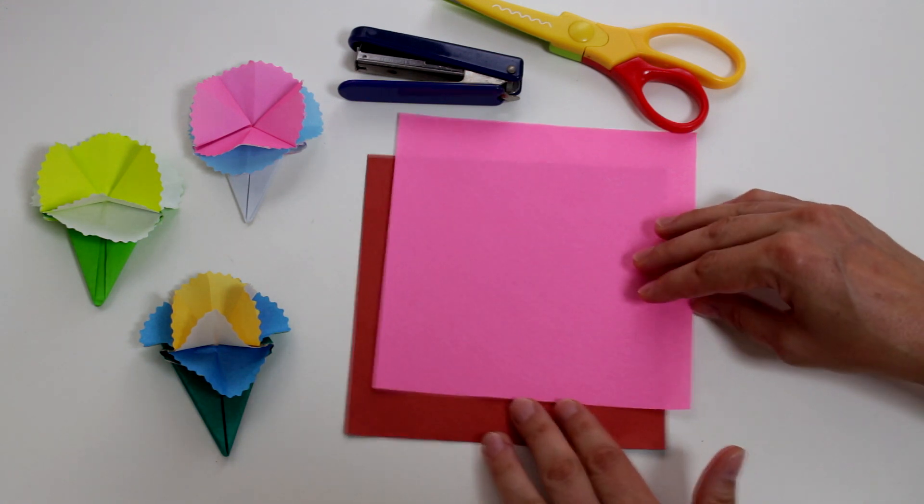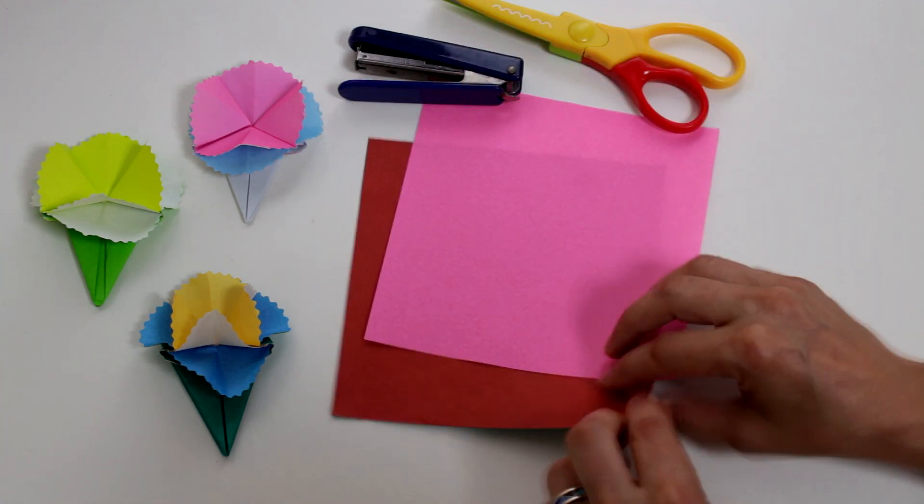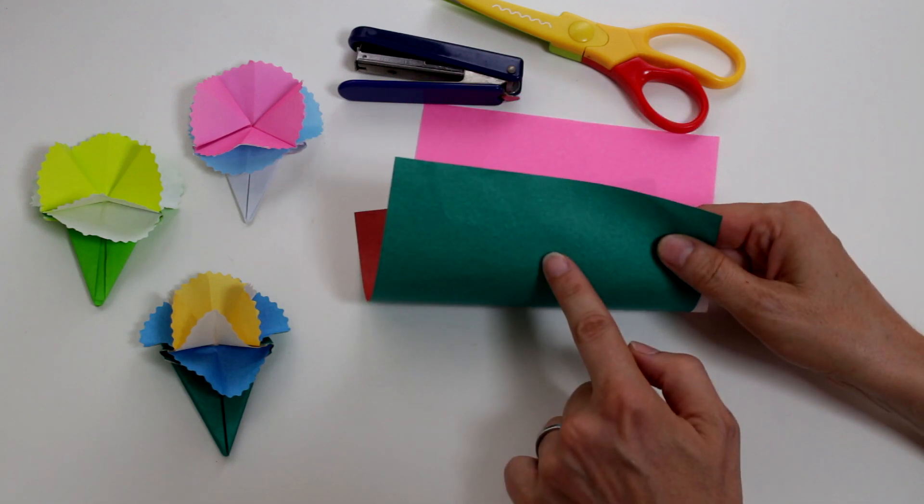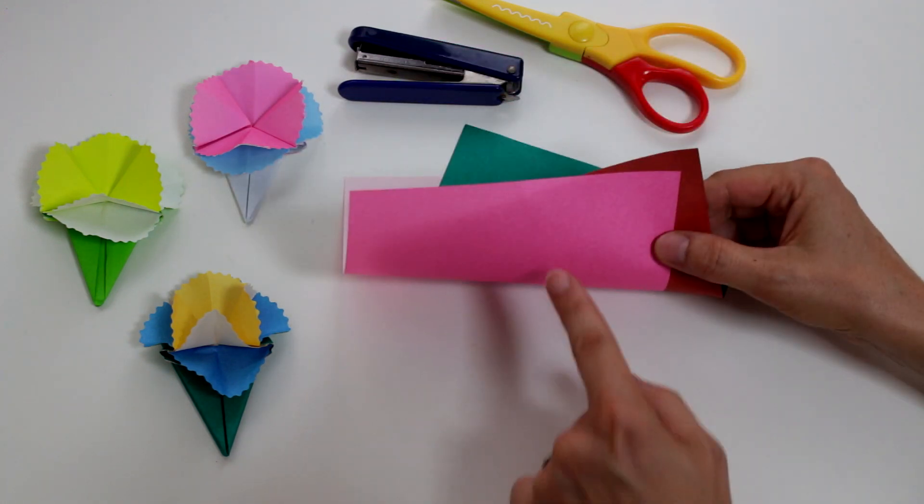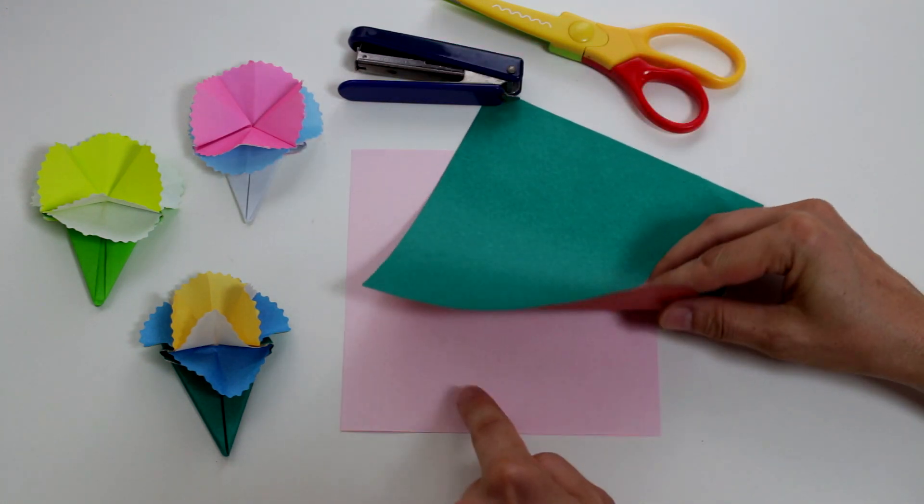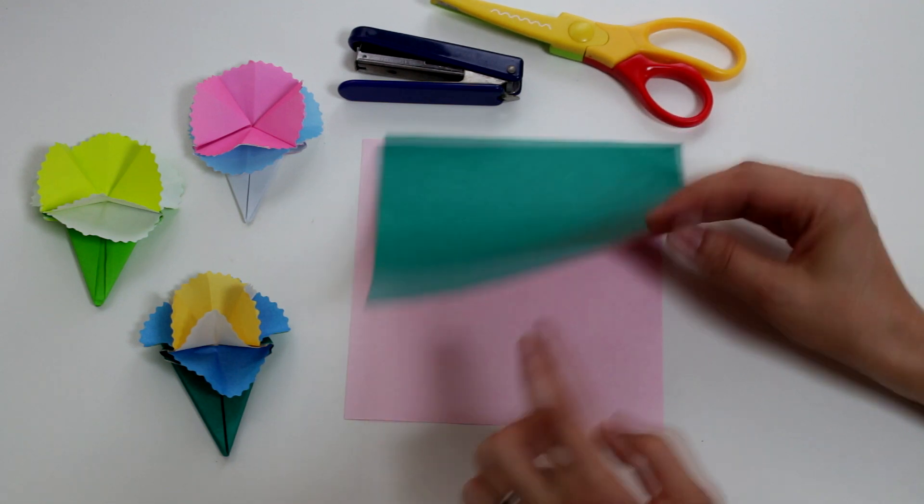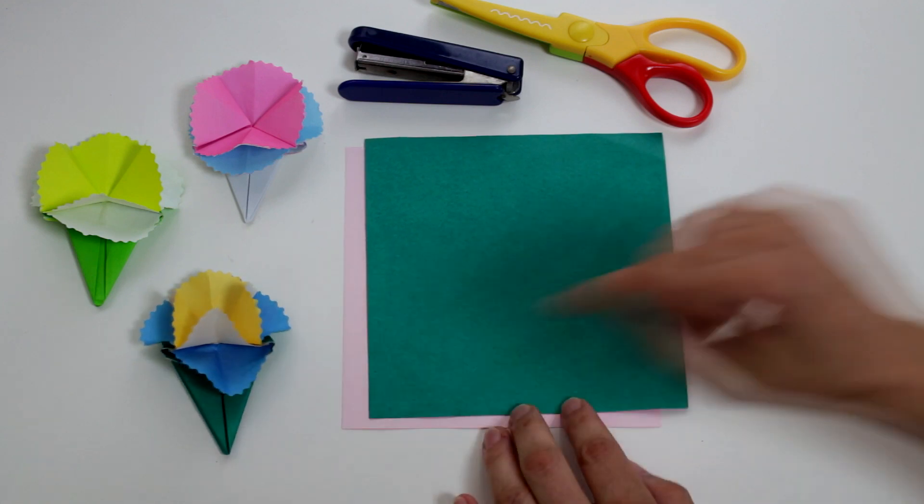This time I'm going to use a pink and white origami paper and another double-sided origami paper that is red and green on the other side. We're going to start with the pink at the bottom and the white facing up, and green on top and red at the bottom because I want this part to be green.